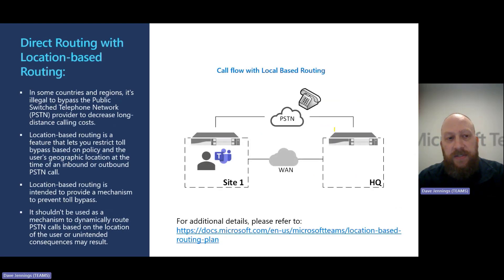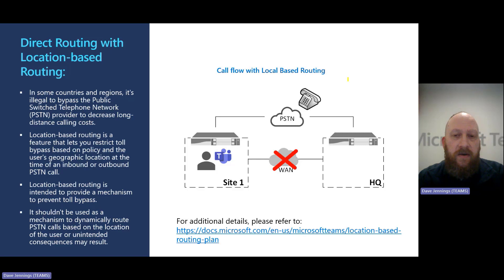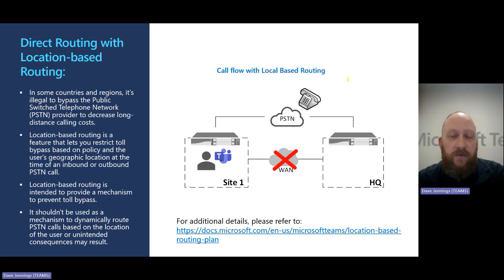There's lots of flexibility in different direct routing models. A final consideration is location-based routing, which can be layered on top of the three traffic flow scenarios to be very prescriptive about how calls route for a given site. This typically comes up for countries with additional regulation like India, Saudi Arabia, and others.